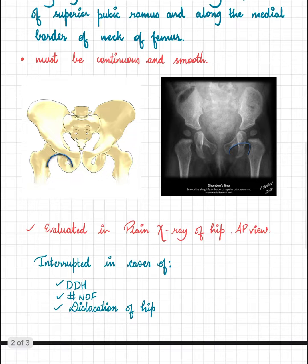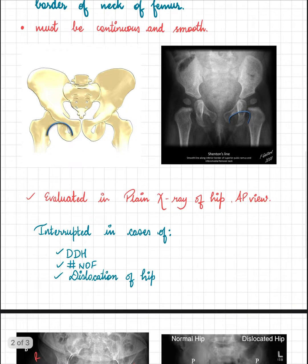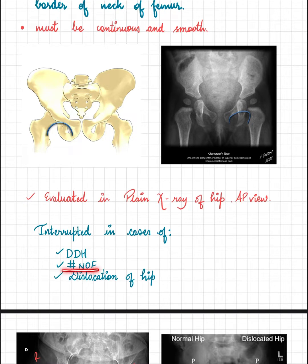Shenton's line is a very important radiographic marker because it is broken in cases of hip pathologies. The most common ones are developmental dysplasia of the hip, fracture of the neck of femur, and dislocation of the hip.